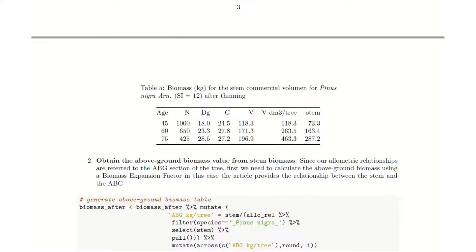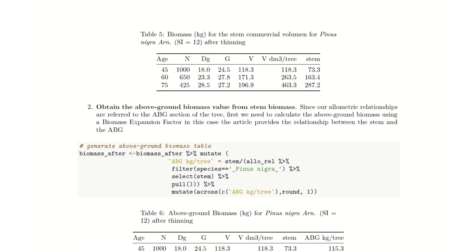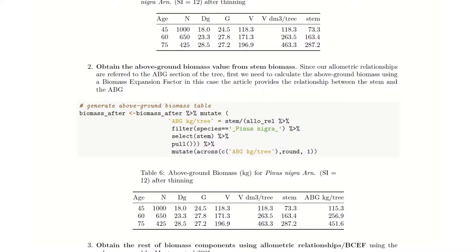Then, next step is to obtain the above ground biomass value from the stem biomass. Since our allometric relationships are referred to the above ground biomass section of the tree, first we need to calculate the above ground biomass using a biomass expansion factor. In this case, the article provides the relationships between the stem and the above ground biomass. So in order to make this comparison, we run this snippet of the script to obtain the above ground biomass of the tree in kilograms per tree.